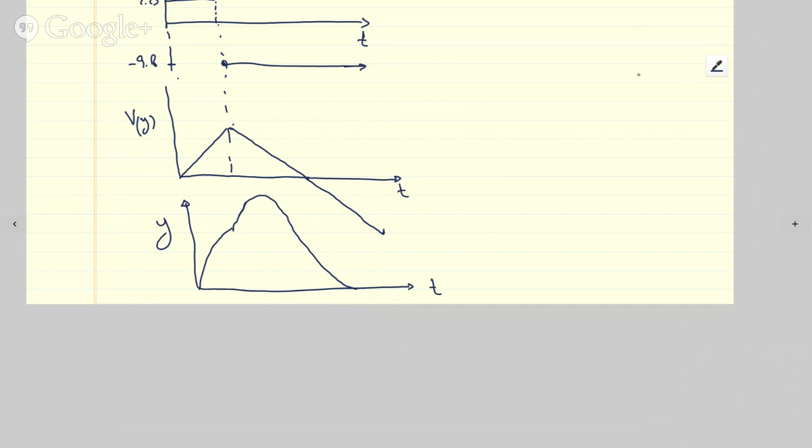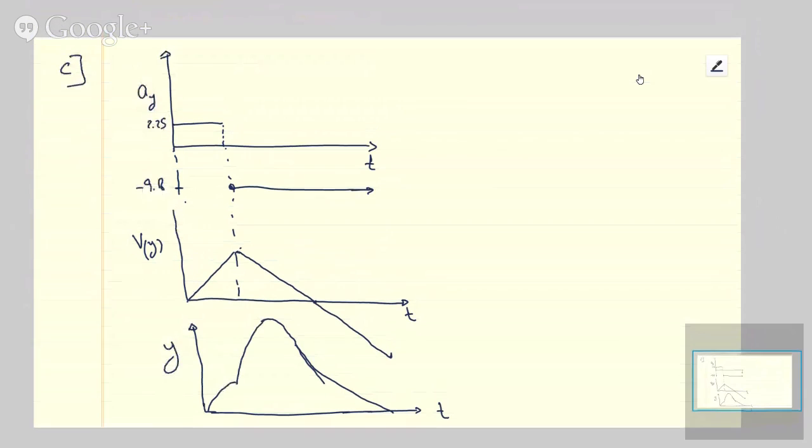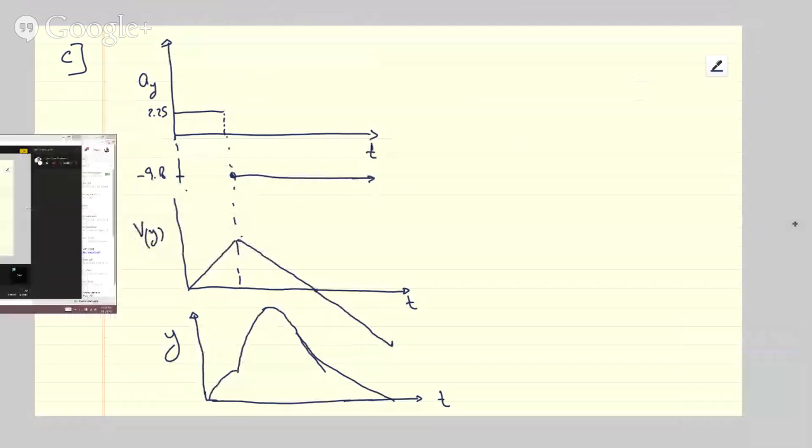It's probably going to be steeper here because it's clamping faster here. So here it's going to be, and then it's going to go like this. And then at some point here it's going to start falling off to zero. So this does it for this question.